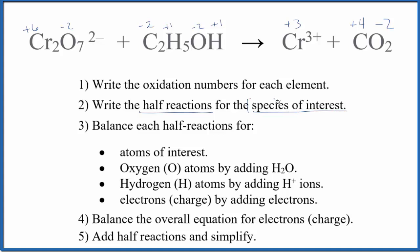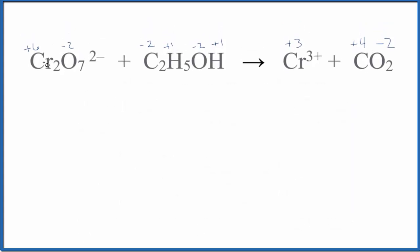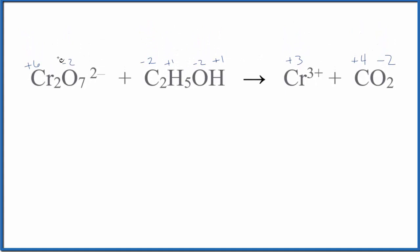The species of interest are just the ones that have their oxidation numbers changed. Let's write those half reactions. We can see chromium, each chromium is +6 and it changes to +3. Since we're reducing this number, +6 to +3, this is the reduction. This is what is being reduced. Then we have our carbon going from -2 to +4. So these are the half reactions we're going to work with.